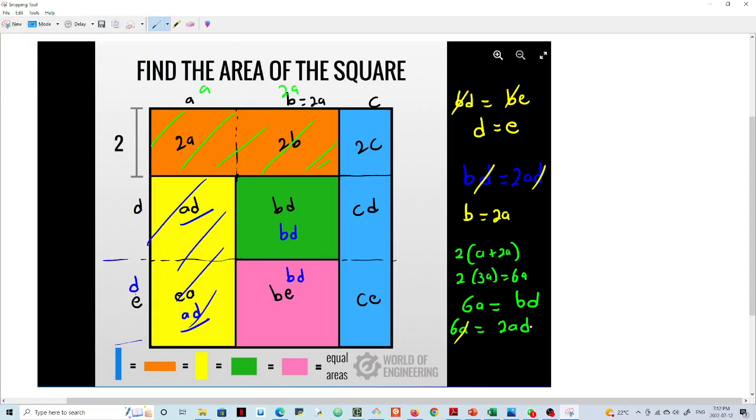this a and this a cancels. So now you have 6 is equals to 2d. This implies that 6 upon 2 is equals to d, so d becomes equals to 3. If d is 3,